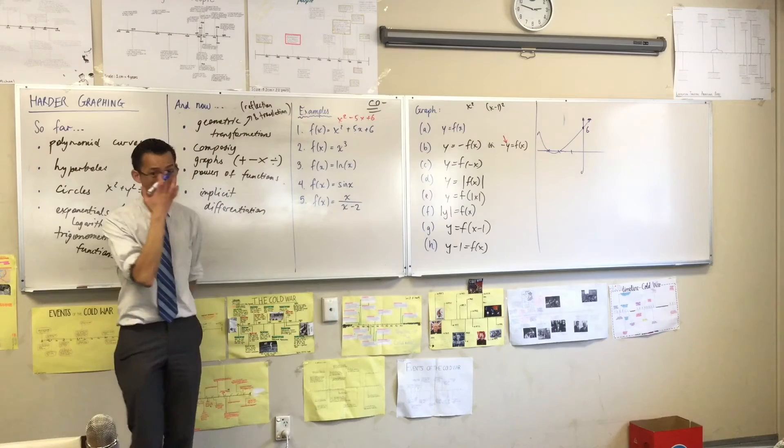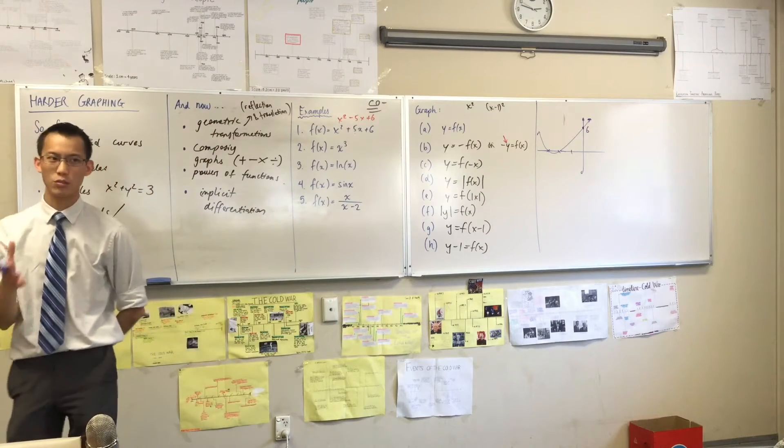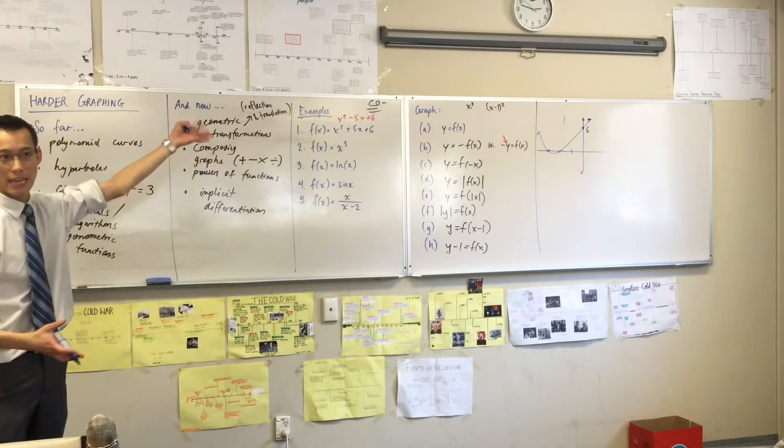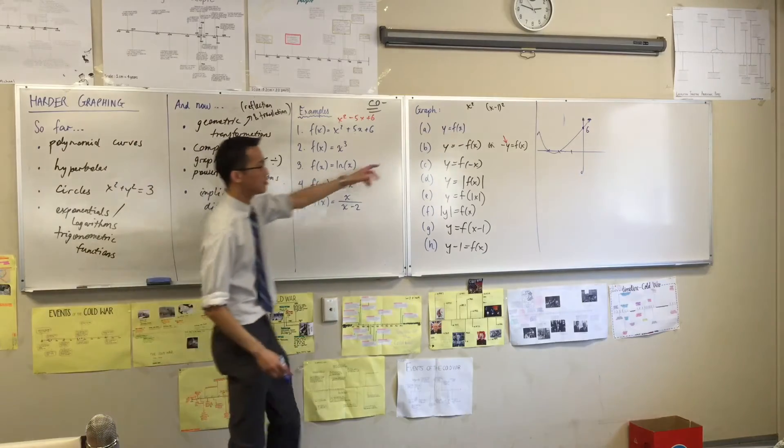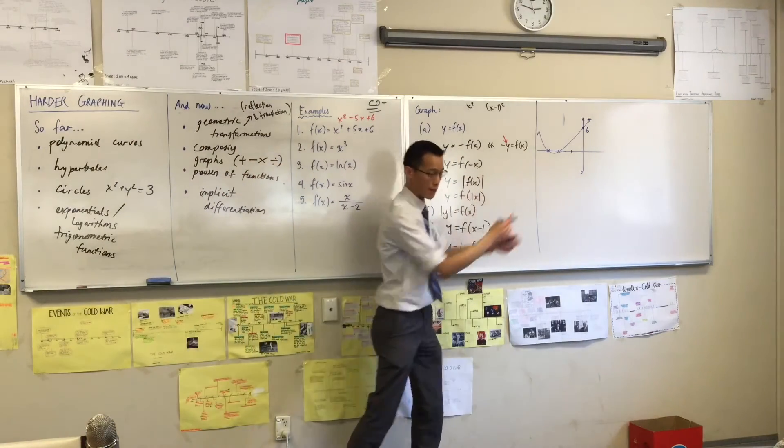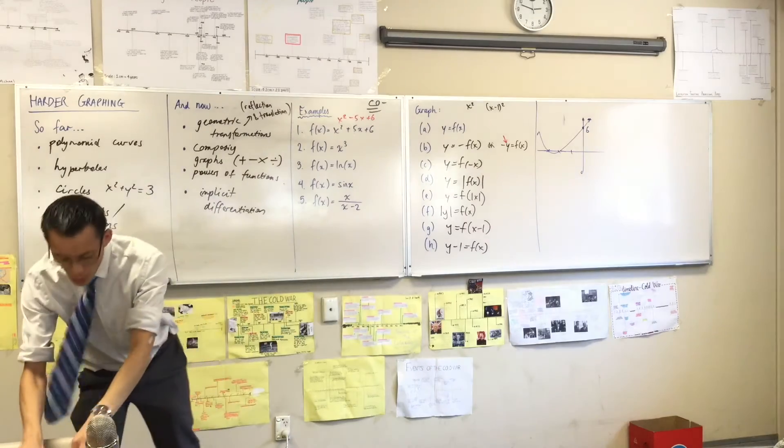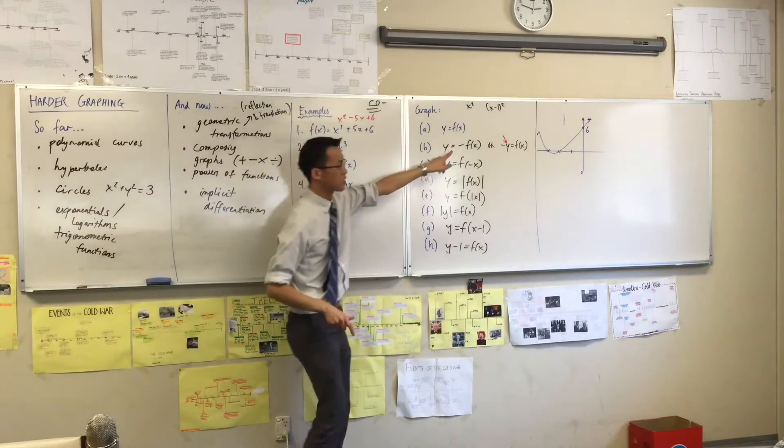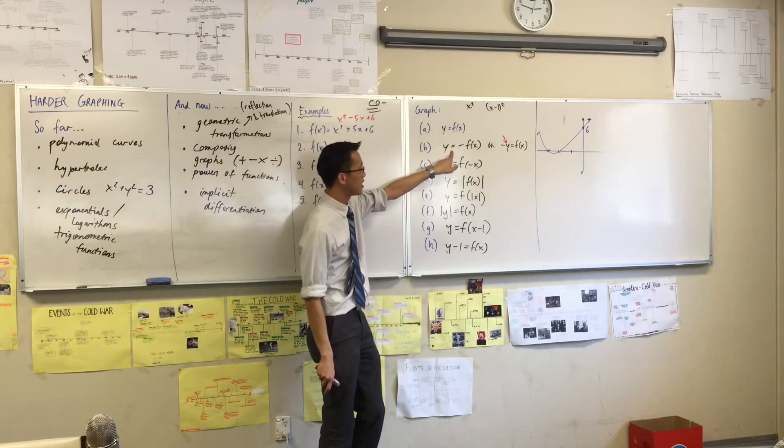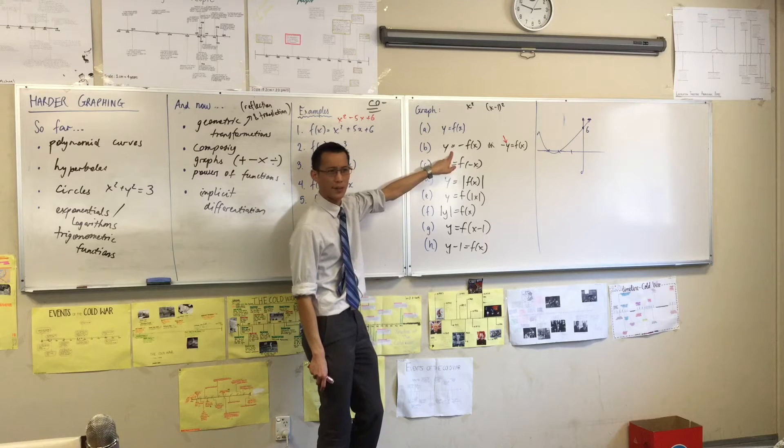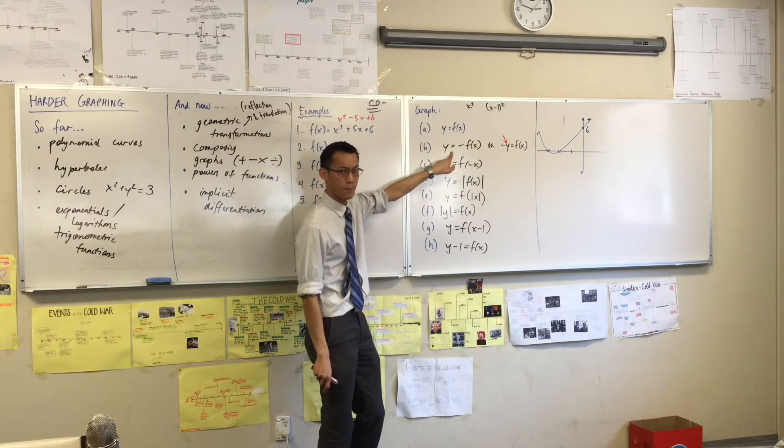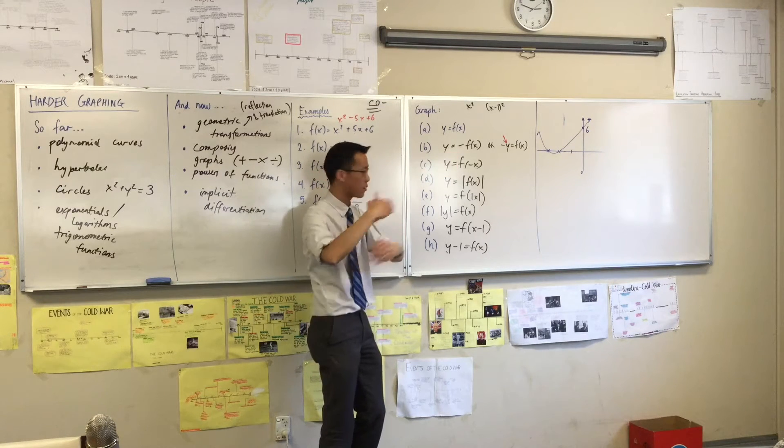So, here's our original graph. Now, frequently, an extension to what you will encounter is they'll give you a printout of the graph, and then they will ask you to transform it in some way on top of the graph. So, that's what I am going to do. We already discussed what this would do, right? We said that this was achieving what kind of reflection? It's going to be vertical.